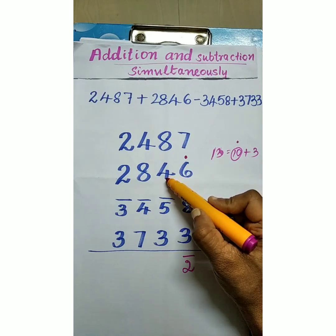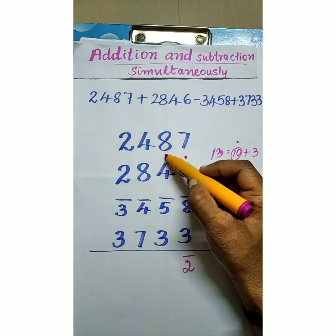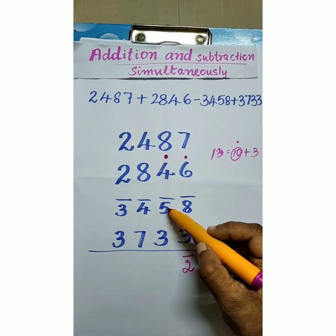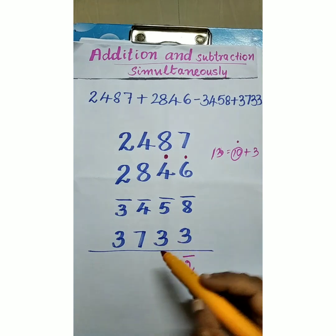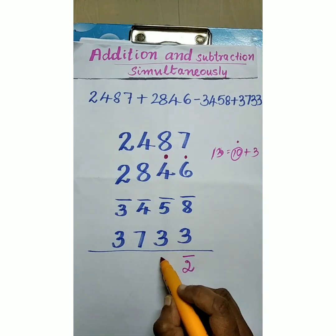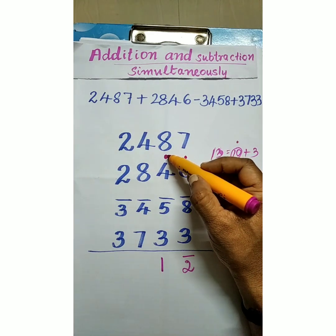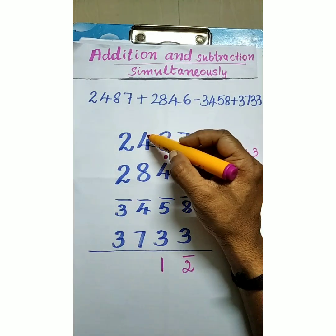9 plus 4 that is 13. Again 10 plus 3. 1 shoot and 3. 3 minus 5 is minus 2. Minus 2 plus 3, that is 1. Again here positive shoot. That is 1.